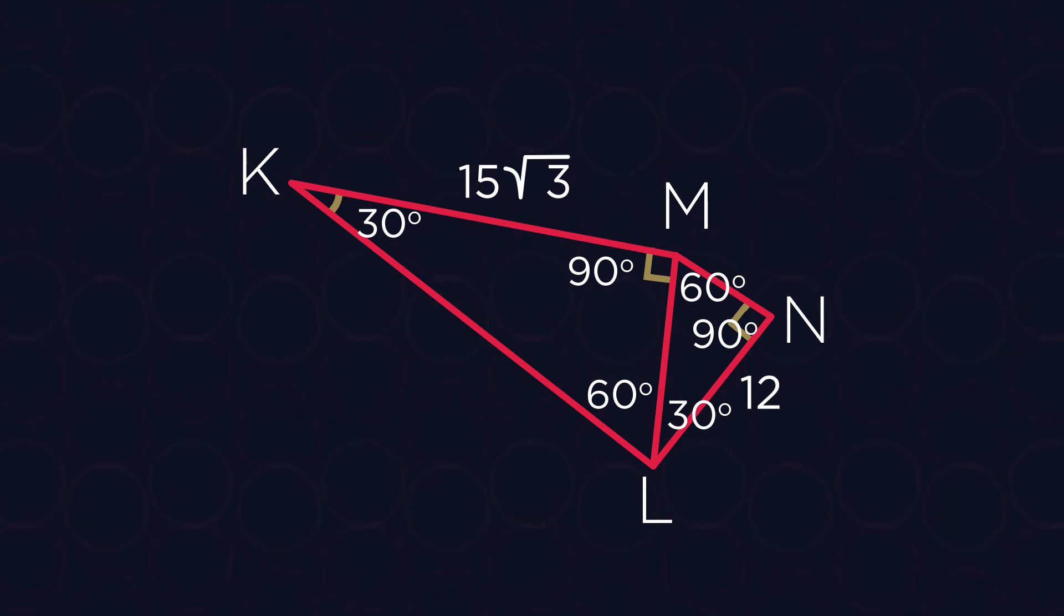How did you do? So KM equals 15 by the square root of 3, and NL equals 12. To find MN, we first need to find ML. It can be calculated from triangle KML.